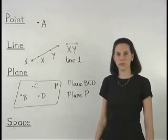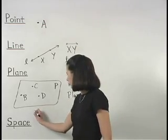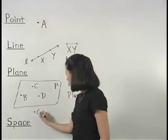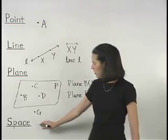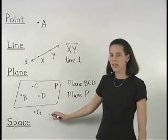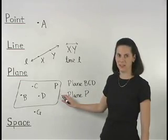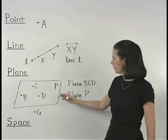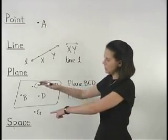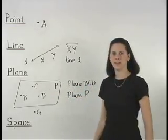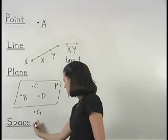If we have a fourth point not on plane BCD, such as point G, then we can introduce an idea called space. Think of point G as being below plane BCD — in other words, plane BCD is here and point G is underneath. Space can be defined as the set of all points.